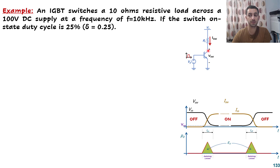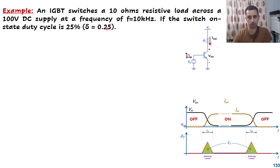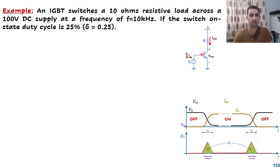We have here a resistive load driven by a switch. The question says an IGBT switches a 10 ohm resistive load. This resistor is a 10 ohm one across a 100 volt DC supply, so VS is 100 volts at a frequency of 10 kilohertz. This is the gate frequency. The switch on-state duty cycle is 25 percent, meaning delta is 0.25.